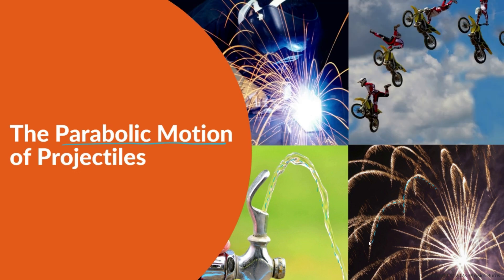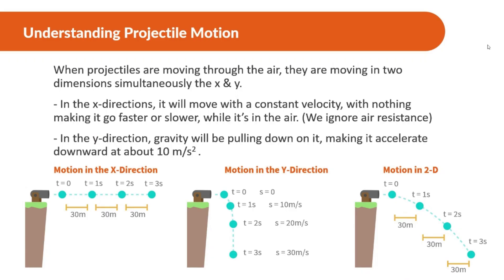They all have this parabolic motion to them. That's how we should see projectiles — they have parabolic motion as they move through the air. Some more notes: when projectiles are moving through the air, they're moving in two dimensions simultaneously, the X and Y direction.